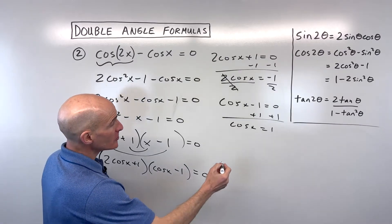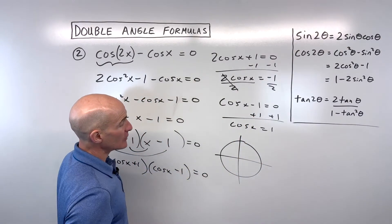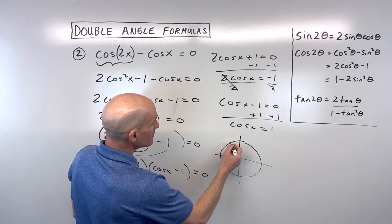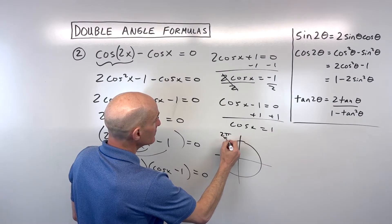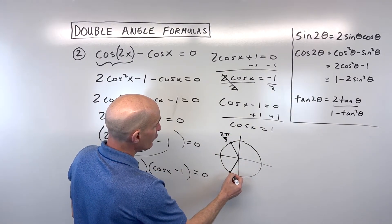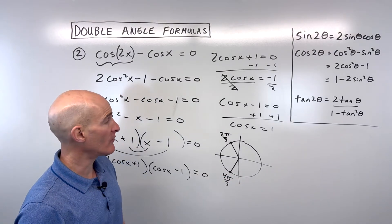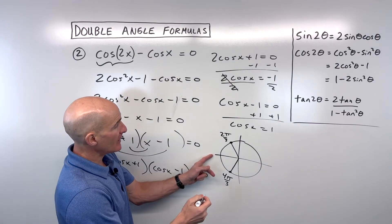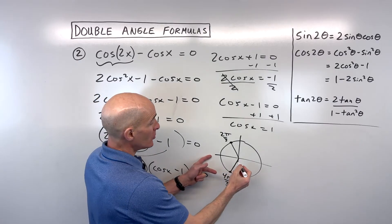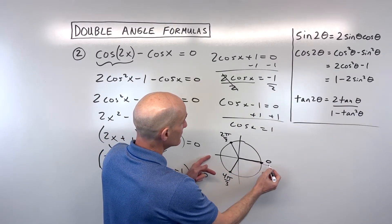So now let's go to our unit circle and ask ourselves, where does cosine equal negative 1/2? Well, that would be right here at 2π/3 and over here at 4π/3. If you need to review the unit circle, check out one of my unit circle videos. And then where does cosine equal 1? Remember, cosine is the x-coordinate on the unit circle, and that's going to be right here at zero.